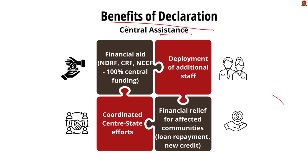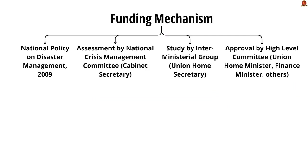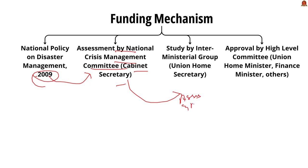Benefits of declaring a national disaster include: central assistance — financial assistance from the National Disaster Response Fund, Calamity Relief Fund, and National Calamity Contingency Fund (NCCF), which is 100% funded by the central government, along with deployment of more staff. There will also be a coordinated effort between the center and state for more effective response, and financial relief for affected communities including additional time for loan repayment and new credit. The funding mechanism works under the National Policy on Disaster Management 2009, under which a National Crisis Management Committee headed by the Cabinet Secretary assesses damage and provides relief assistance.